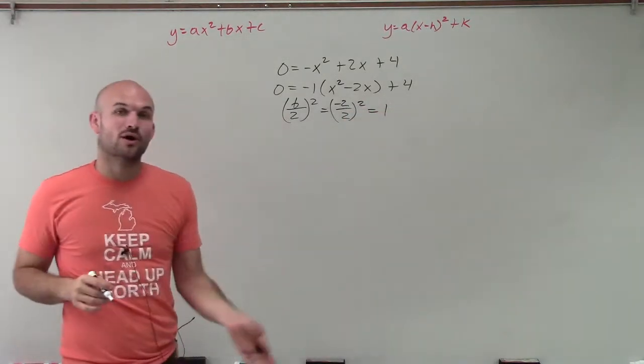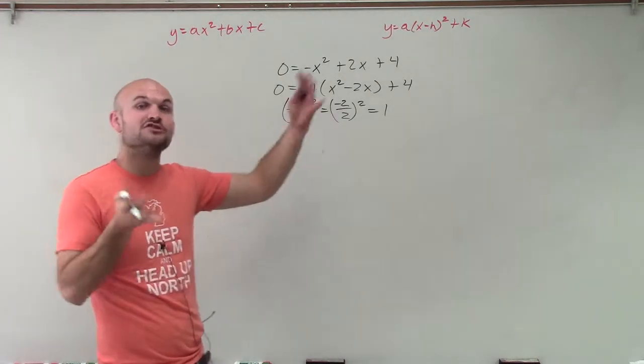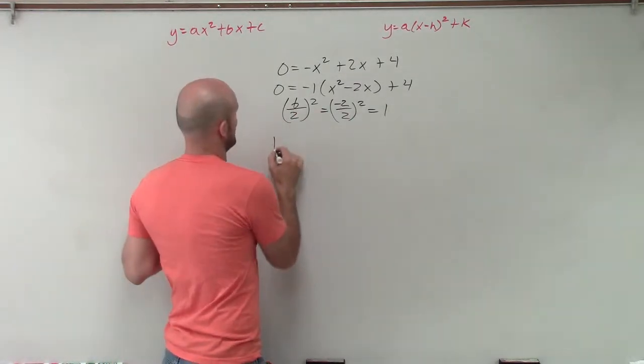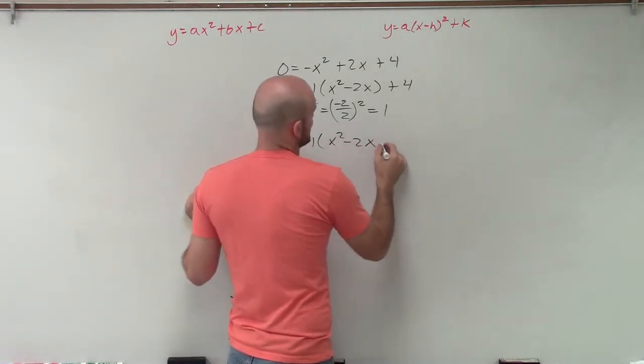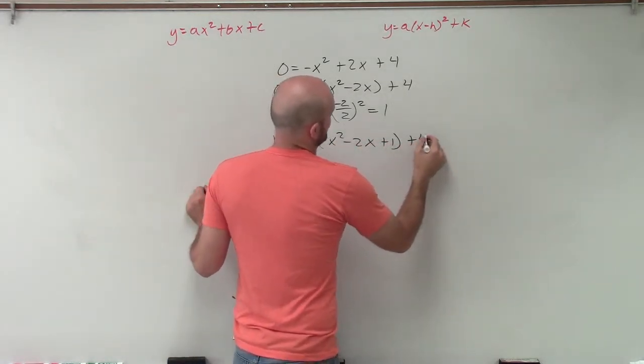So now I'm going to make sure I add that 1 to the left and the right side of my equation to keep everything equal. So I have 1 plus 0 is 1 equals negative 1 times x squared minus 2x plus 1 plus 4.